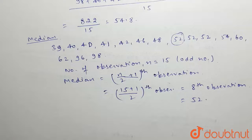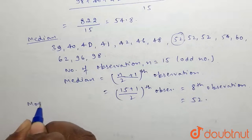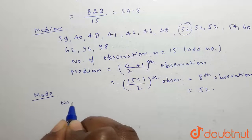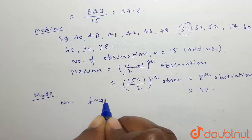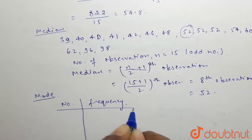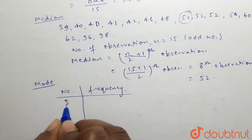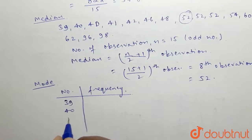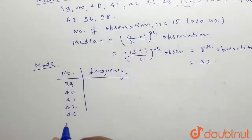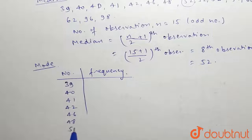Now for mode, we will write the numbers and their frequencies. The numbers are: 39, 40, 41, 42, 46, 48, 52.